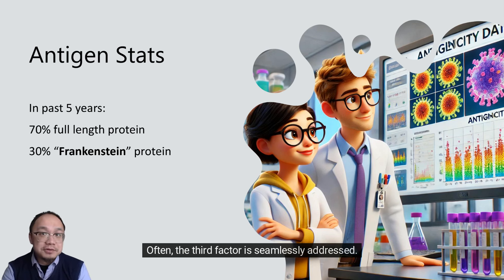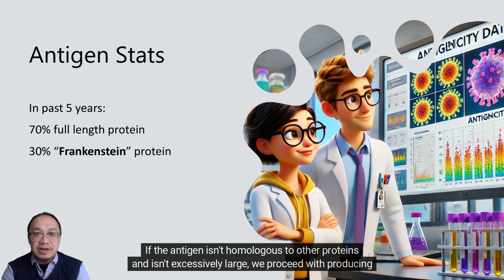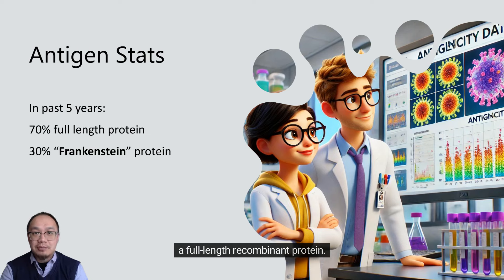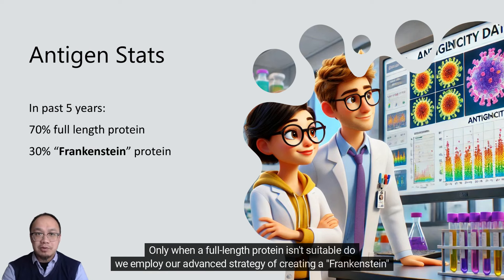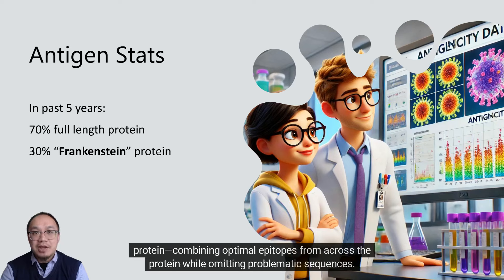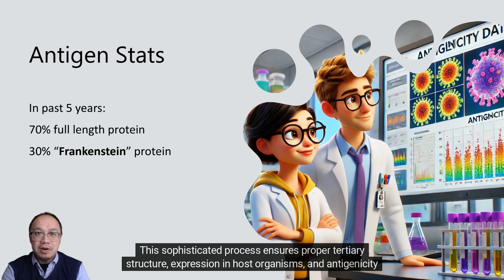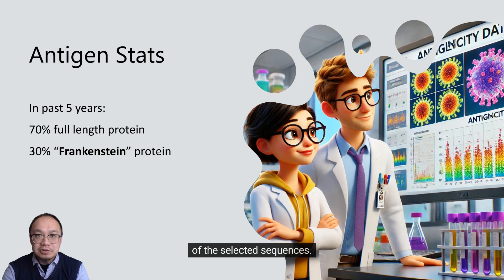Often, the third factor is seamlessly addressed. If the antigen isn't homologous to other proteins and isn't excessively large, we proceed with producing a full-length recombinant protein. Only when a full-length protein isn't suitable do we employ our advanced strategy of creating a Frankenstein protein — combining optimal epitopes from across the protein while omitting problematic sequences. This sophisticated process ensures proper tertiary structure, expression in host organisms, and antigenicity of the selected sequences.